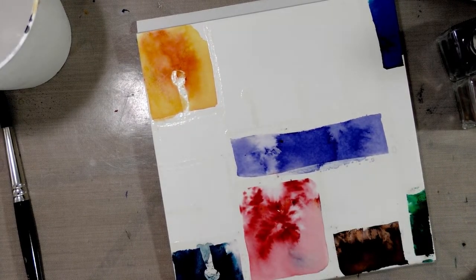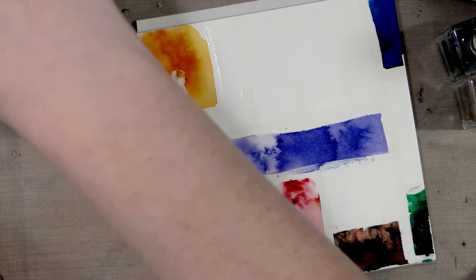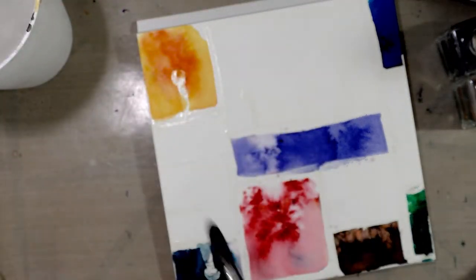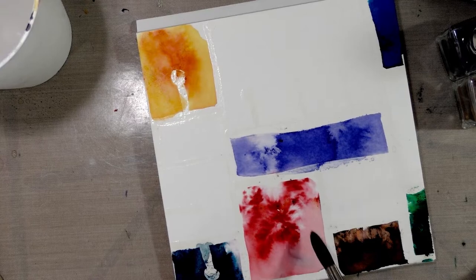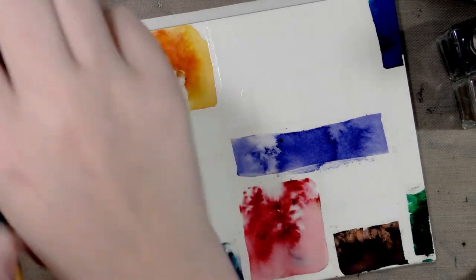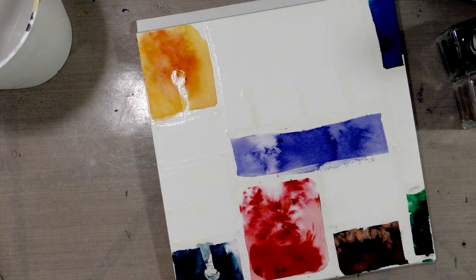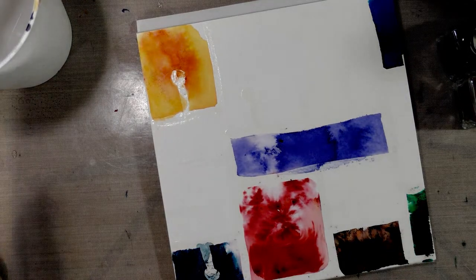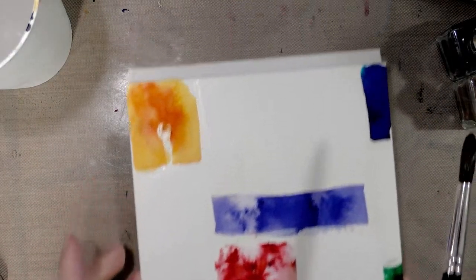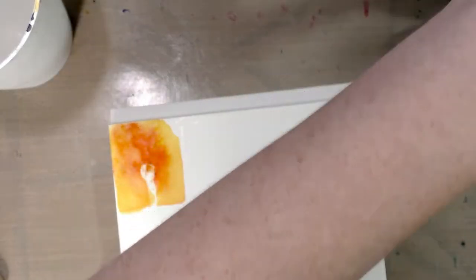So this has had a chance to dry, we're going to go ahead and brush off the excess Brusho. Now I want to go ahead and go back into that red square. I have a cup of clean water to help me facilitate this, and I'm just going to sprinkle—there we go, so much better.